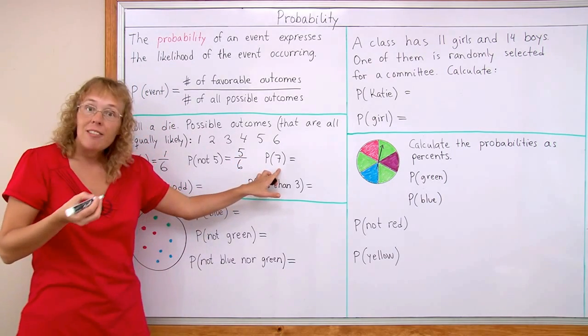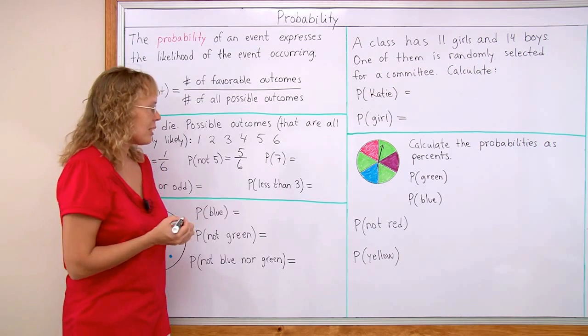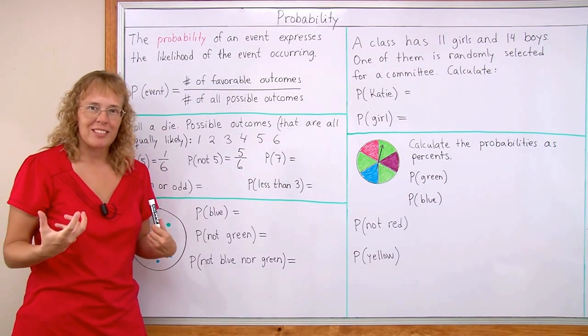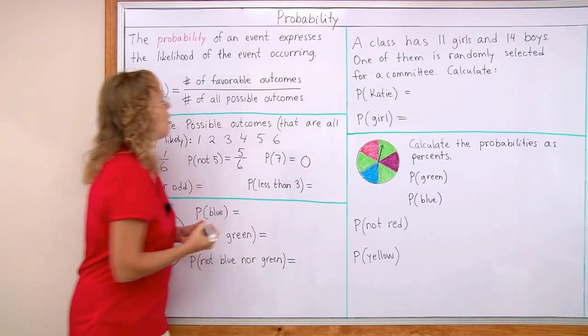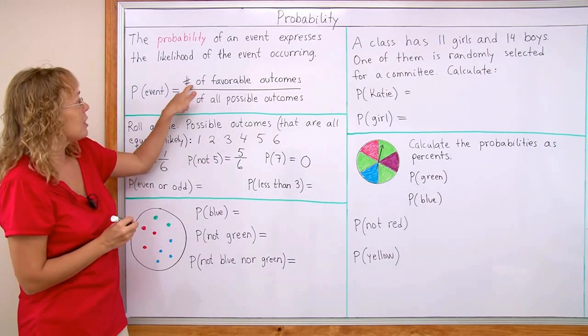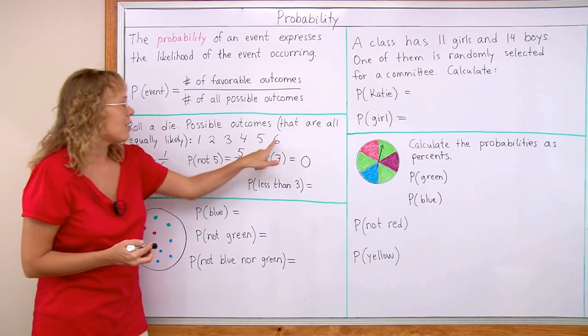What's the probability of rolling seven on a die? Well, that's an impossible event, right? So the probability is then zero. Or if you use the formula, you would have zero here. None of these are seven.